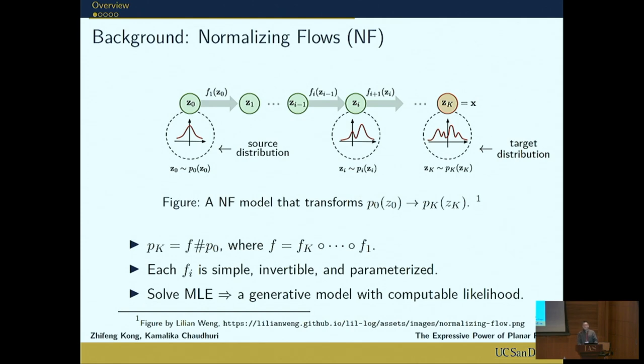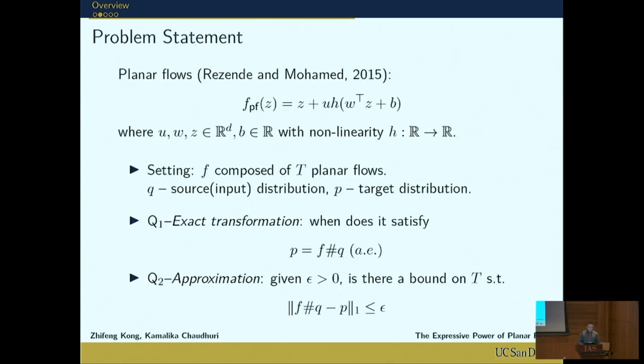When we have a bunch of data, we can solve the MLE problem and obtain a generative model with computable likelihood. In this work, we focus on a basic kind of normalizing flow called planar flows in the following form, where u, w, z are vectors, b is a real number, and h is a non-linearity, just like those activation functions in neural networks.